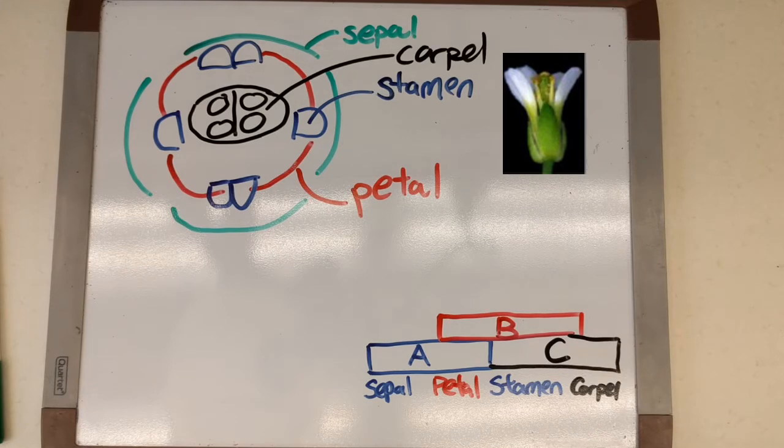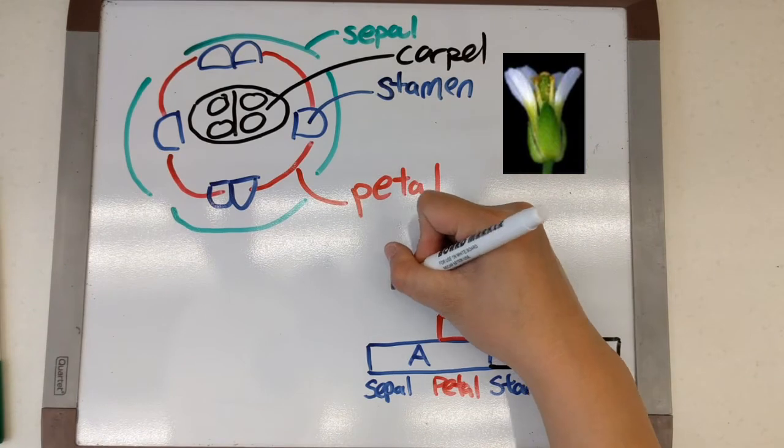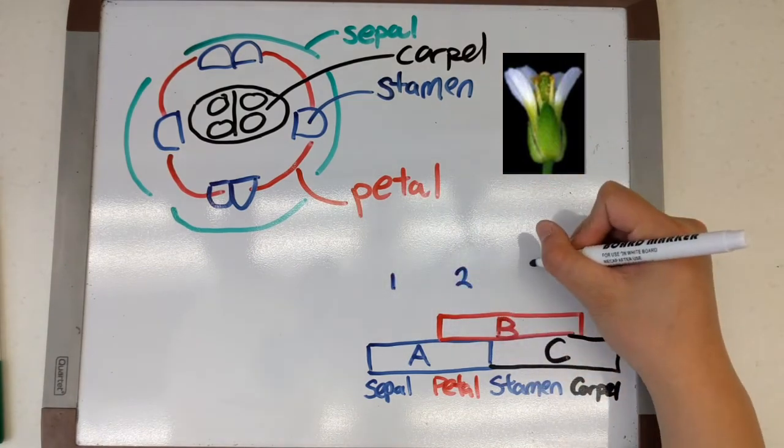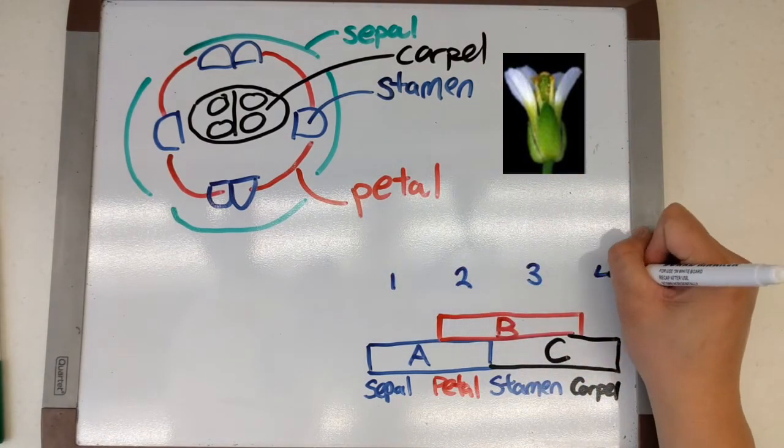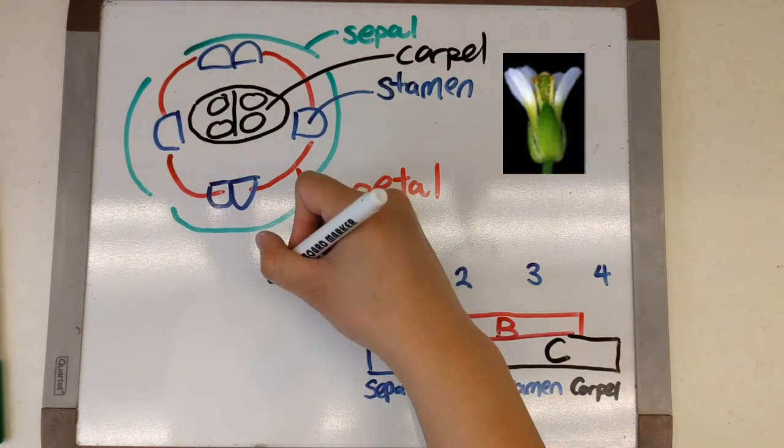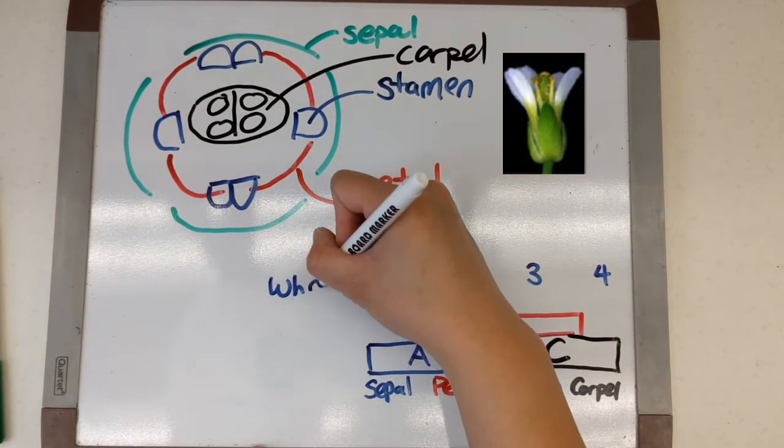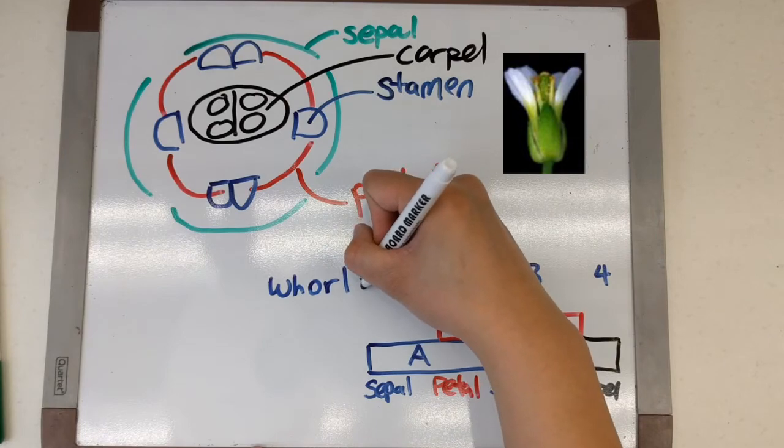Now in this diagram in the bottom right the whorls are numbered 1 to 4 from left to right. So the sepals will be 1, petals 2, stamen 3, and carpal 4. And keep in mind this is in a wild type flower.